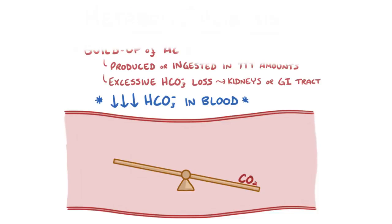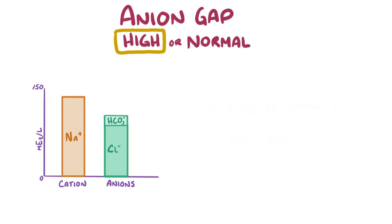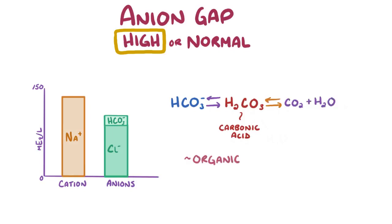This can be broken down into two categories, based on whether the anion gap is high or normal. The first category of metabolic acidosis is a high anion gap metabolic acidosis. In this case, the bicarbonate ion concentration decreases by the binding of bicarbonate ions and protons, which results in the formation of carbonic acid, which subsequently breaks down into carbon dioxide and water. These protons can come from organic acids which have accumulated in the blood, but they can also come from increased production in our body.